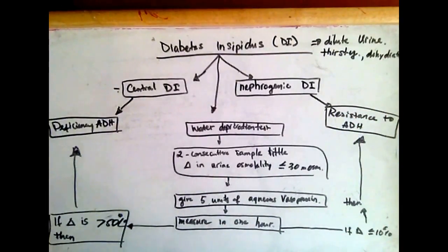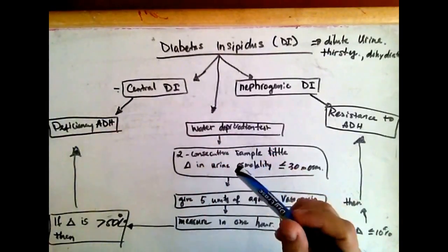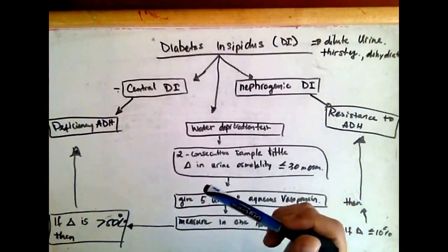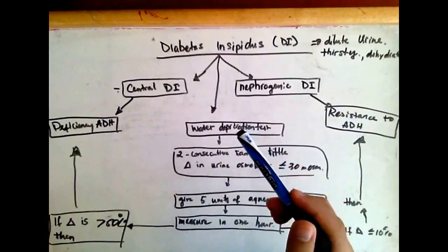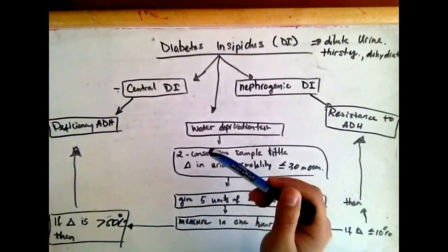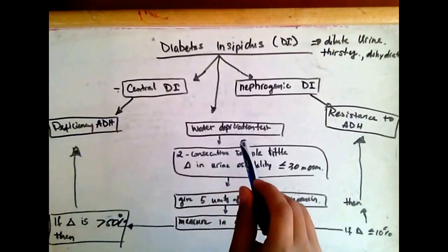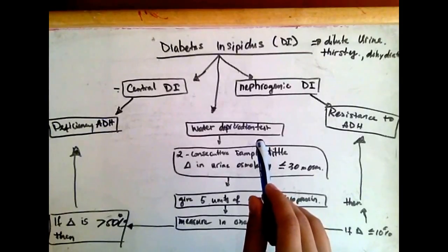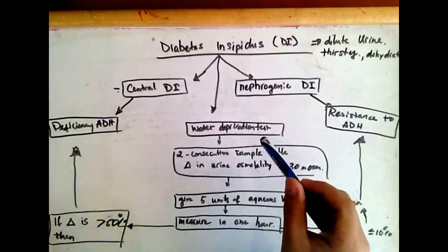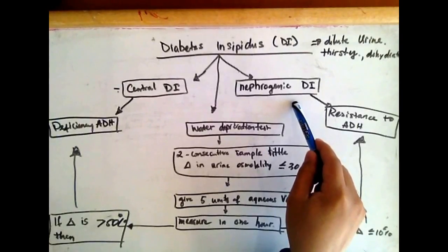Diabetes insipidus can be partial or complete, and is caused by two mechanisms: deficiency of ADH called central diabetes insipidus, or nephrogenic diabetes insipidus, which is resistance to ADH on the actions of the kidneys.